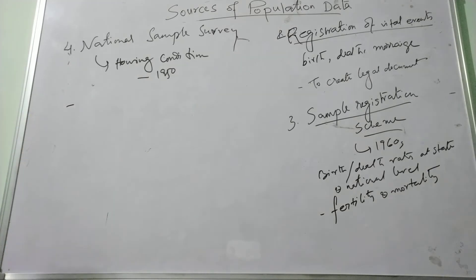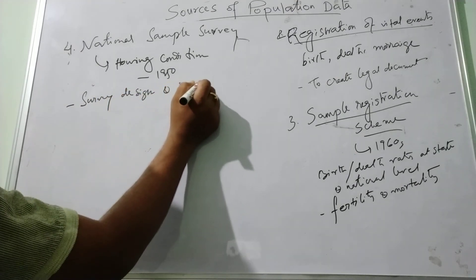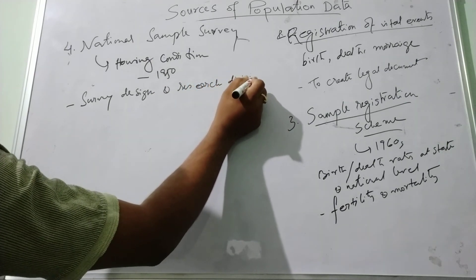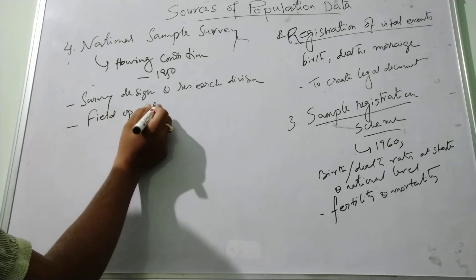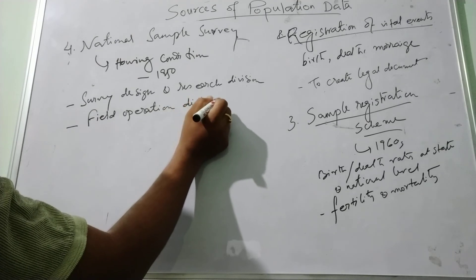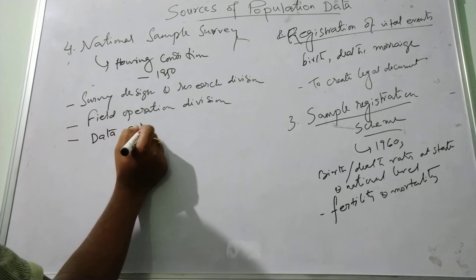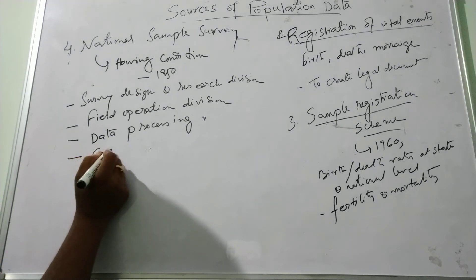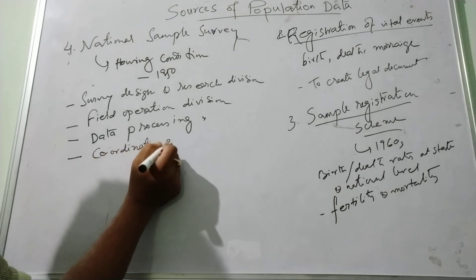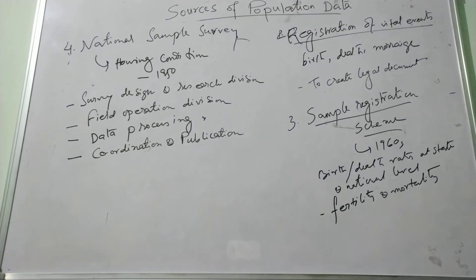This national sample survey has four divisions: first is the survey design and research division, field operations division, data processing division, and coordination and publication division. There is a whole different cycle of the survey extending over a period of 10 years.